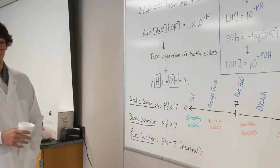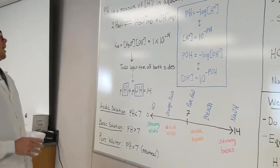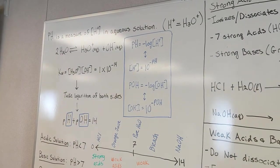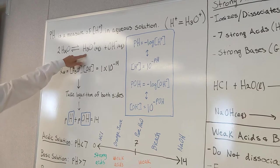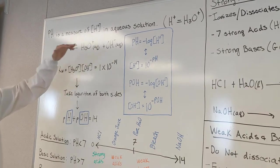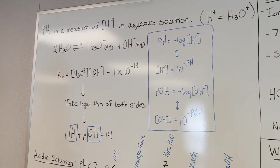So, pH is a measure of the hydrogen ion concentration in solution. Basically what we have here, just our basic equation, we have H2O breaking up into H3O plus and OH minus. So that's going to be the basis of all acid-based chemistry that we're going to be covering.